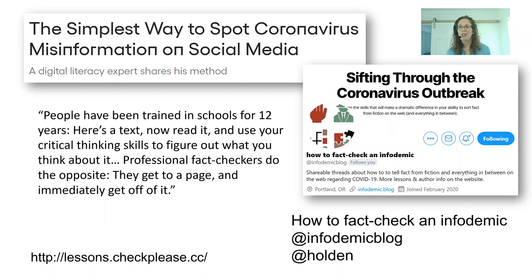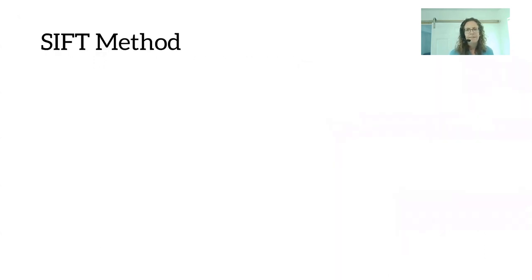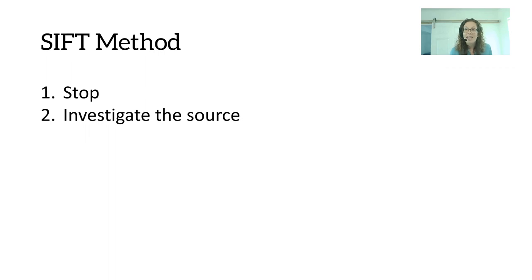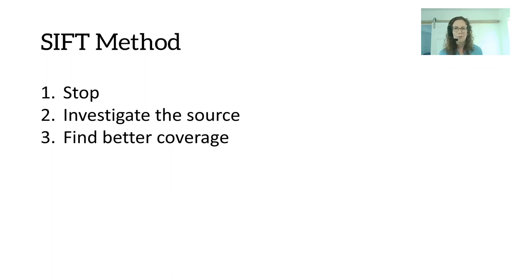Disinformation is very much a systemic problem and we'll get into that later. He promotes the SIFT method, starting with: first, stop. While that might sound simple, the design of social media platforms does not encourage us to do that. Twitter, Facebook, and Instagram encourage us to act quickly and not pause to think: is this something I really want to like or reshare? Then: investigate the source, seeing if it's from a reliable news source. Find better coverage — even if the story turns out to be true, it's probably better to share a version from a journalistic outlet you know produces thorough and trustworthy coverage.